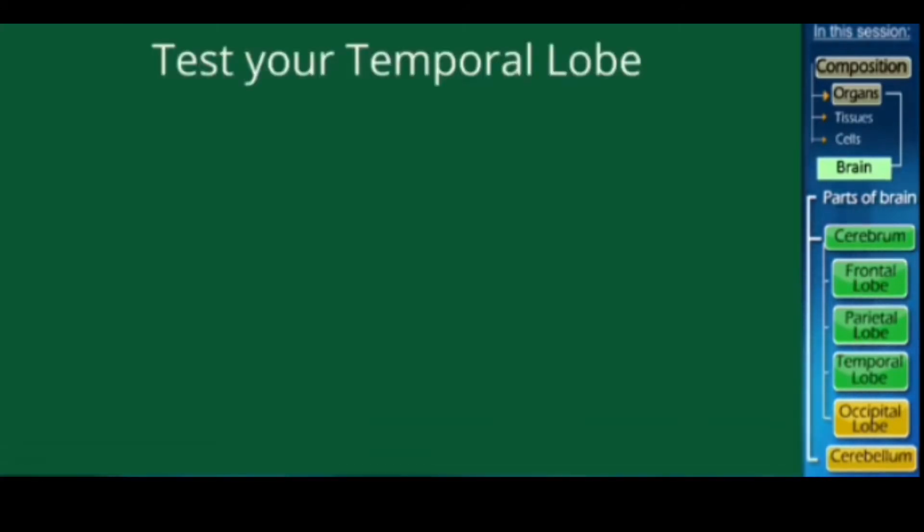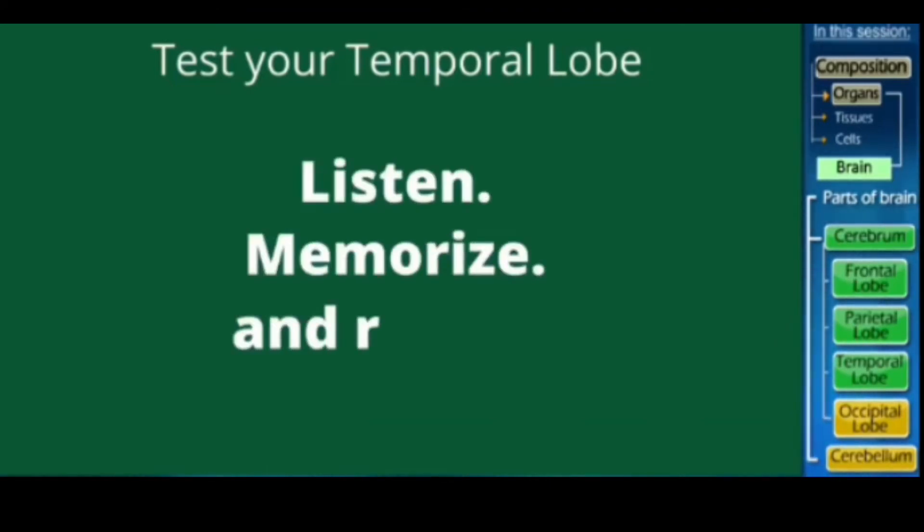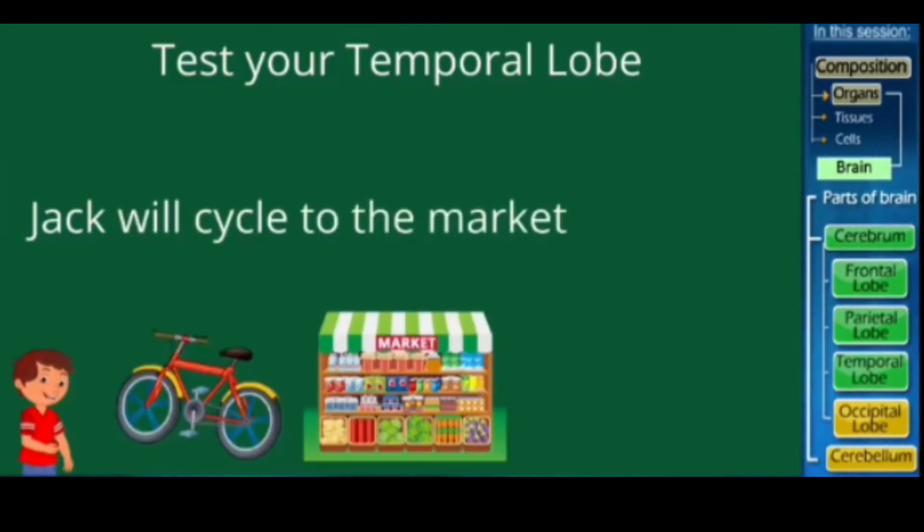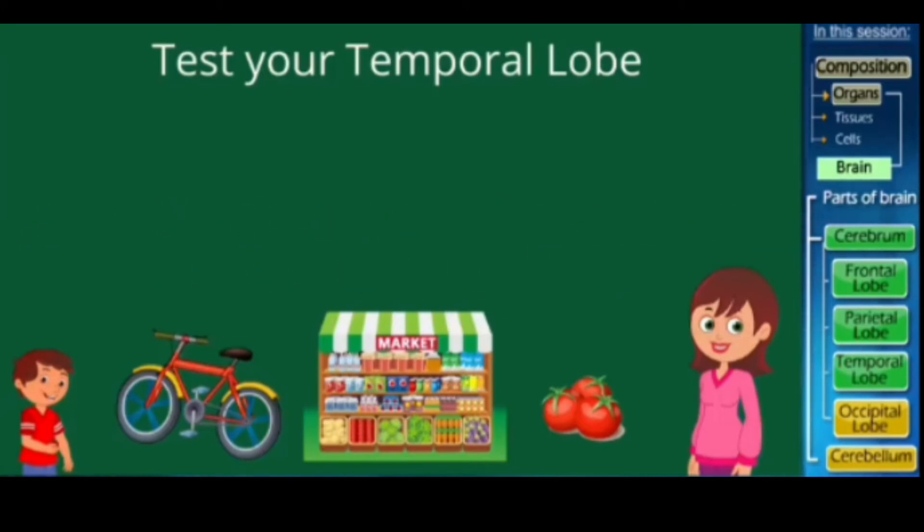Do you want to test this lobe too? Okay, so all that you have to do is listen to the statement, memorize it well and repeat it later. Are you ready? Here we go. Jack will cycle to the market and bring tomatoes for his mother. Now repeat. Did you get it right? You are brilliant.